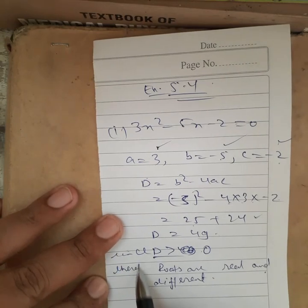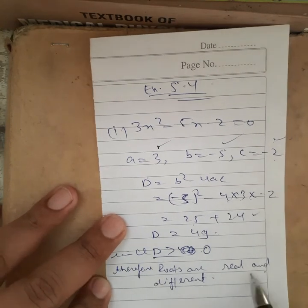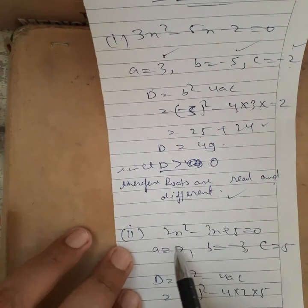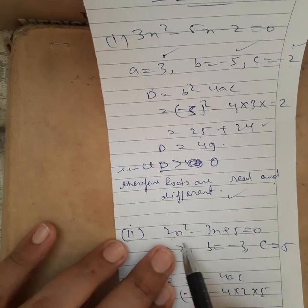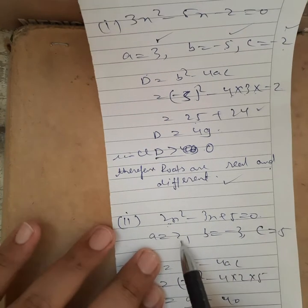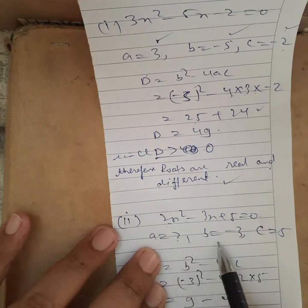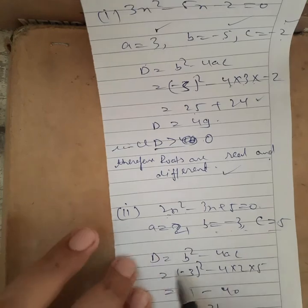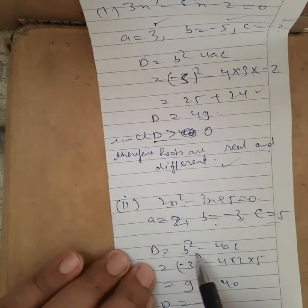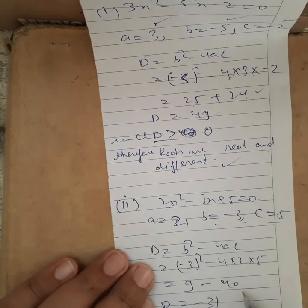Next, look at the second part of question number one: 2x² - 3x + 5 = 0. Here a = 2, b = -3, c = 5. Then D = b² - 4ac.